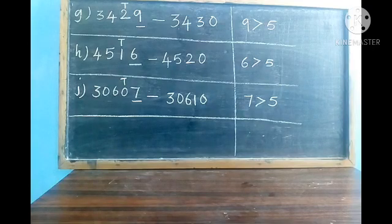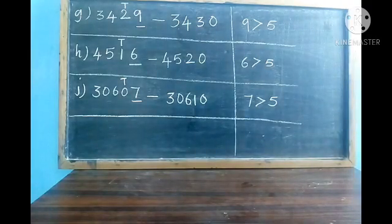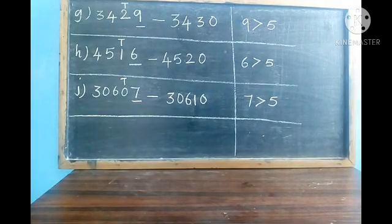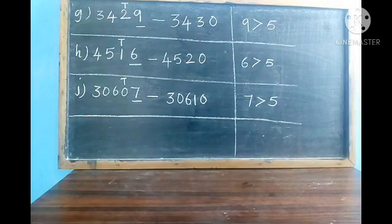H division: 4516. Underline the ones place value and write T above the tens place value. 6 is greater than 5, so we write the next 10. The next 10 of 1 is 2. Write 4 as it is, write 5 as it is, and instead of 1 write 2. The answer is 4520.